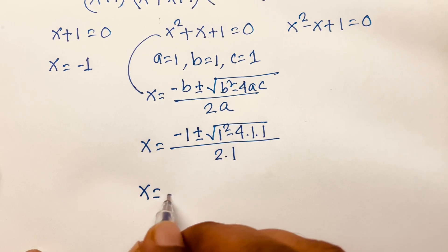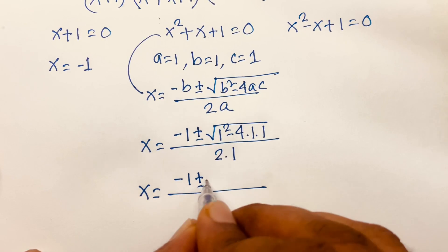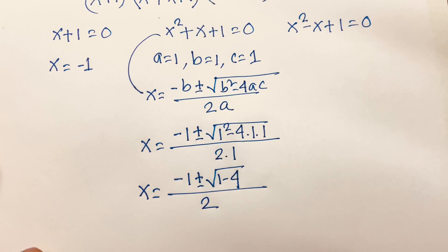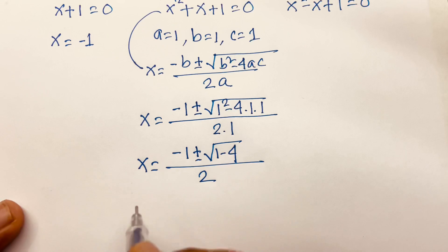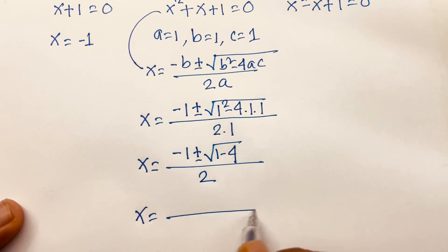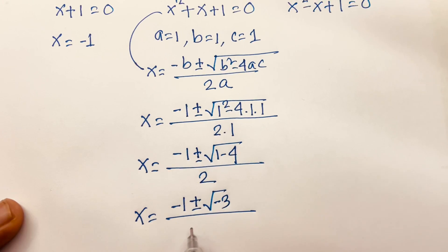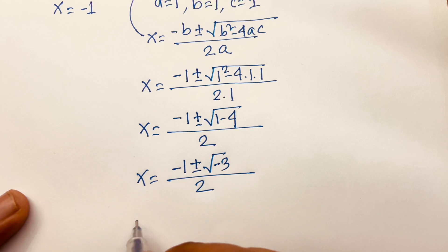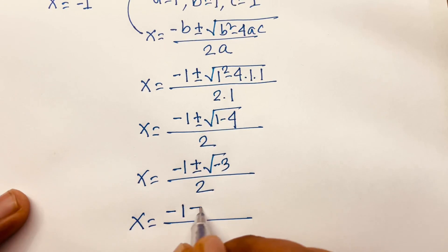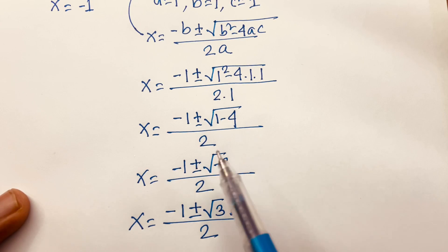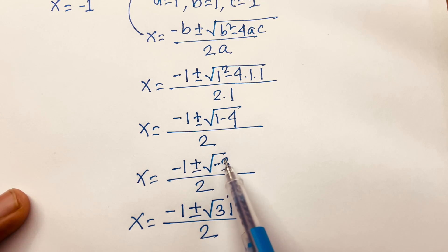Substituting: x = (-1 ± √(1 - 4)) / 2 = (-1 ± √(-3)) / 2. Since √(-3) = √3 · i, where i is the complex number i = √(-1), we get x = (-1 ± √3 · i) / 2.